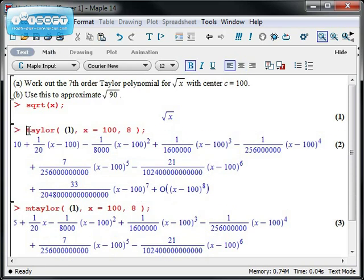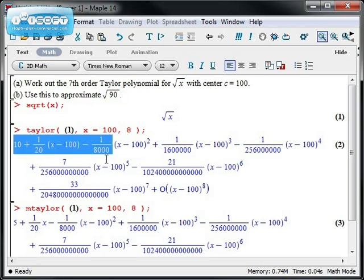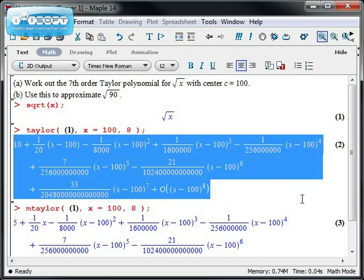So what about the second bit? Well, the second bit was to go and to use our Taylor approximations to approximate 90. In other words, this formula right here approximates the square root of x. Let's go and plug in x equals 90 into it.